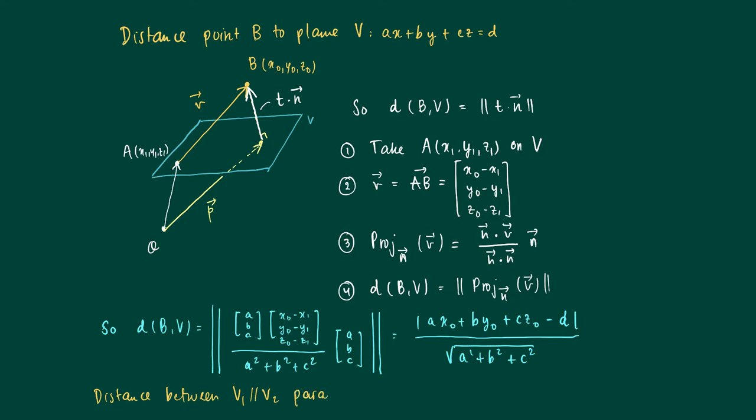So how could we calculate the distance between two parallel planes? Well, it's kind of the way we calculated the distance between two parallel lines. You may just pick a point B in one plane, in V2, and another point on V1. Use the procedure here because the distance between V2 and V1 just equals the distance of this point B to V1.